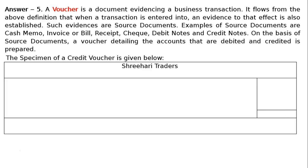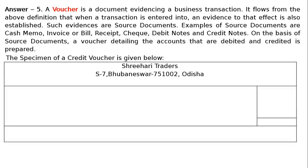The name of the business will be written first — the name of the business, the name of the proprietor, whatever may be the case. This is Sri Hari Traders, the address: S7, Bhubaneswar 751002, Odisha. This is the place.